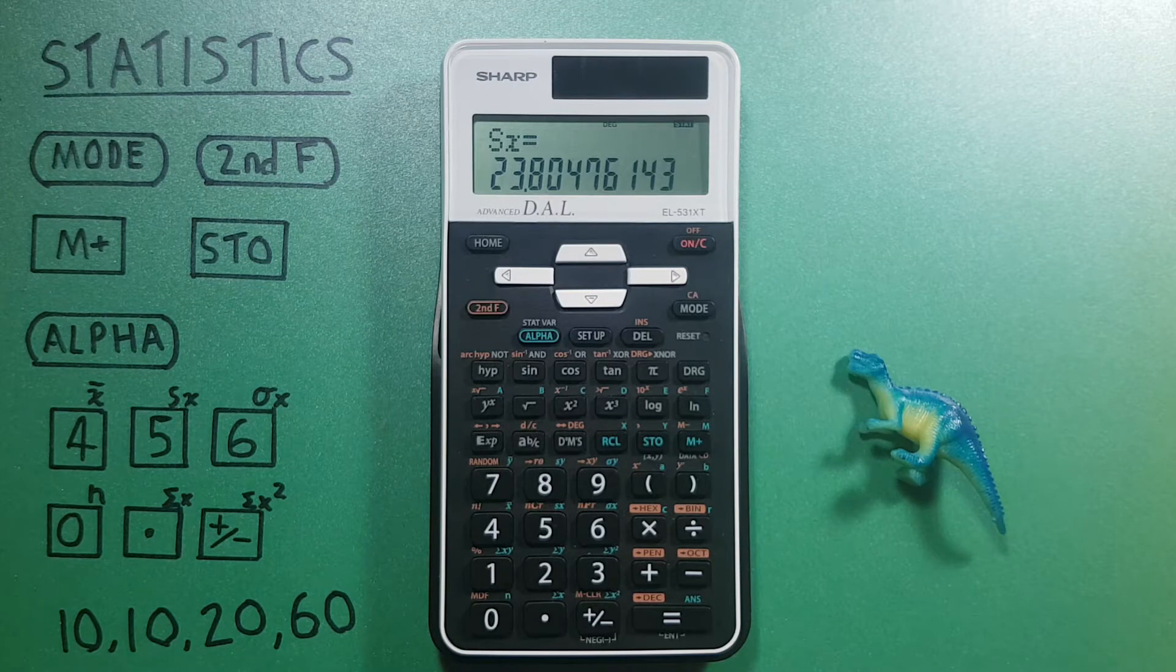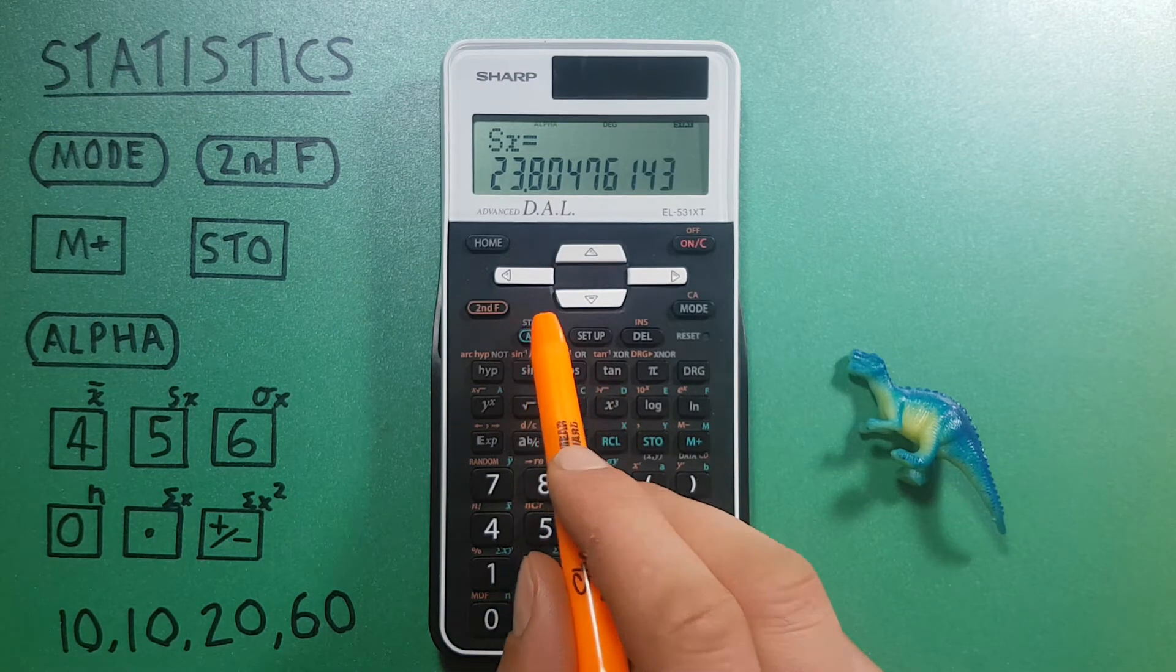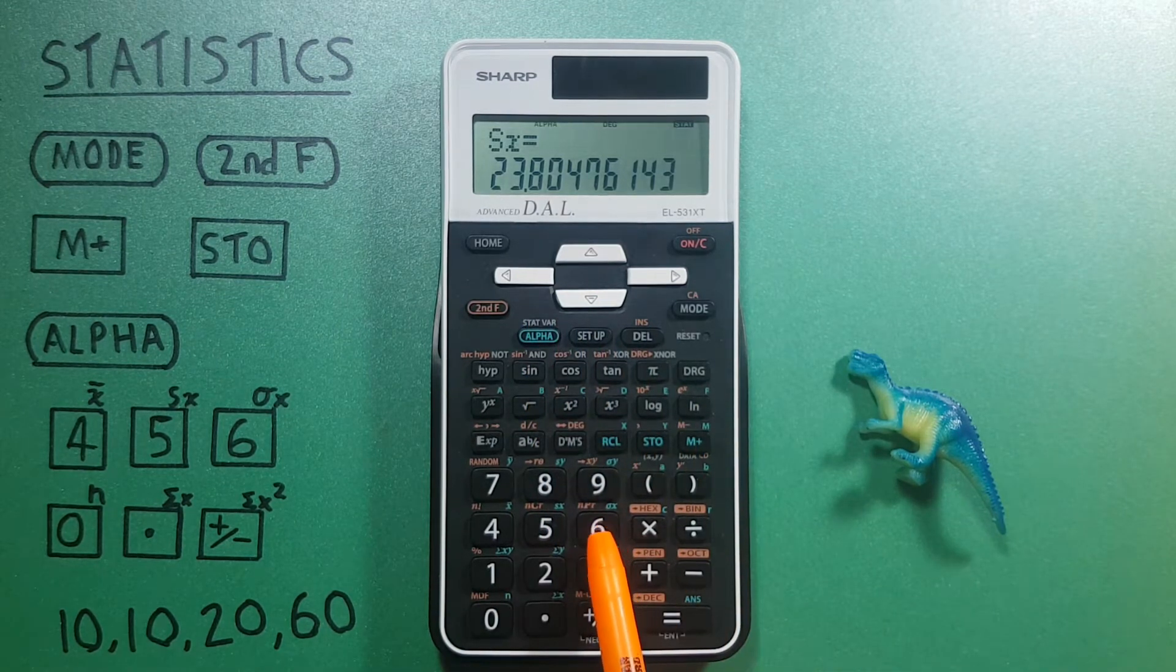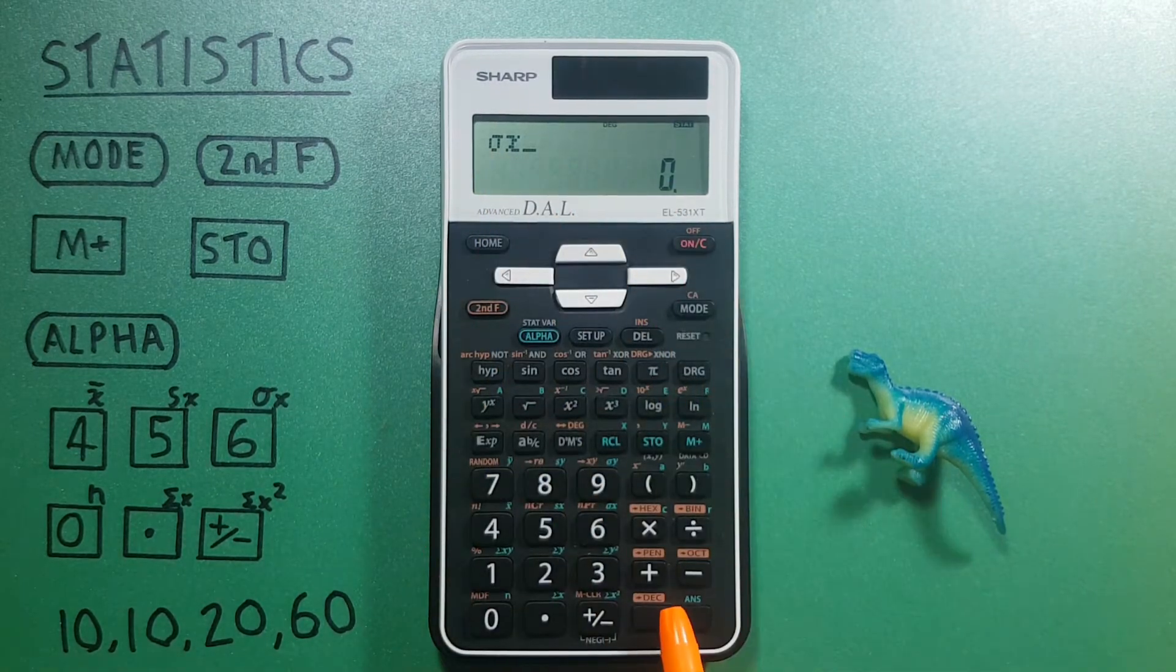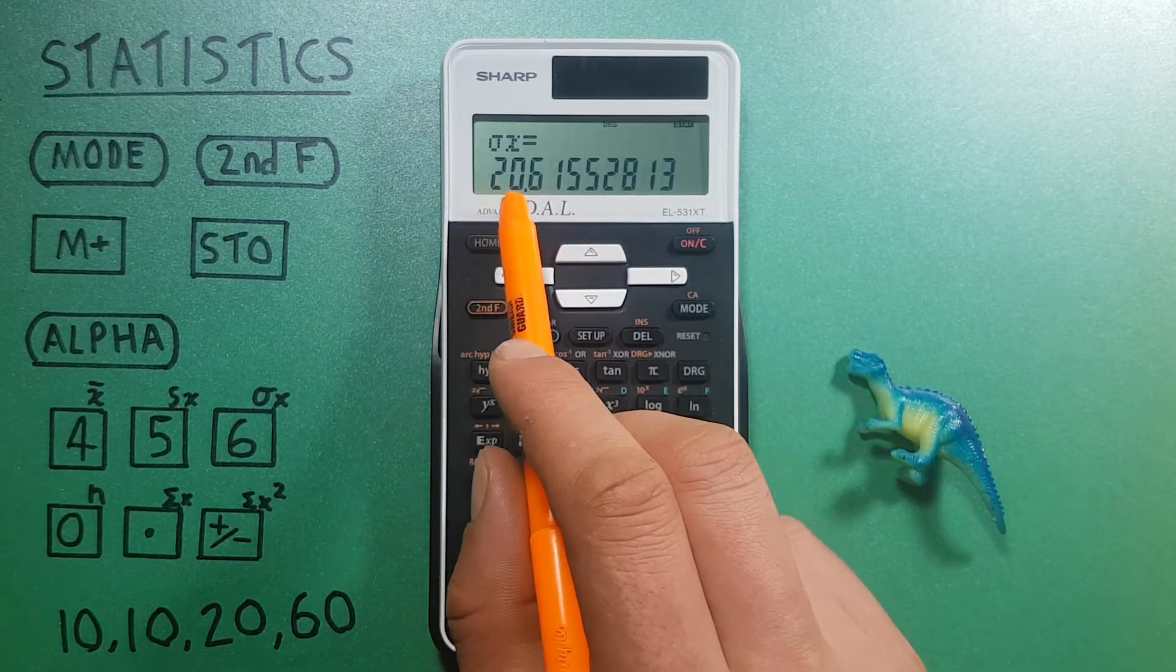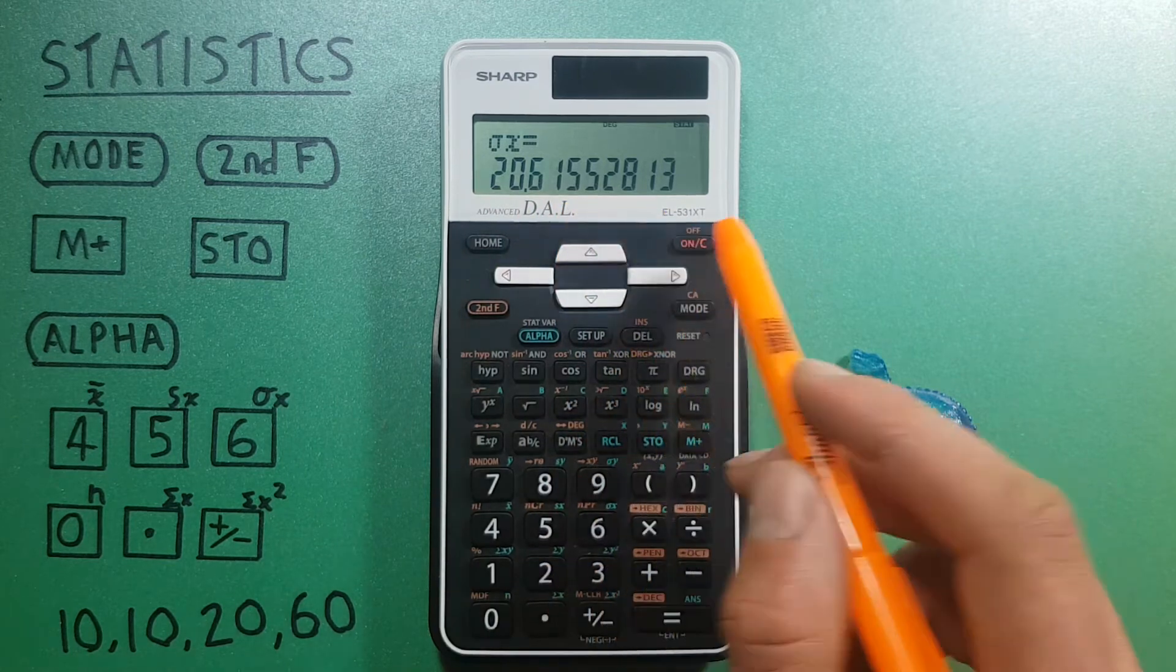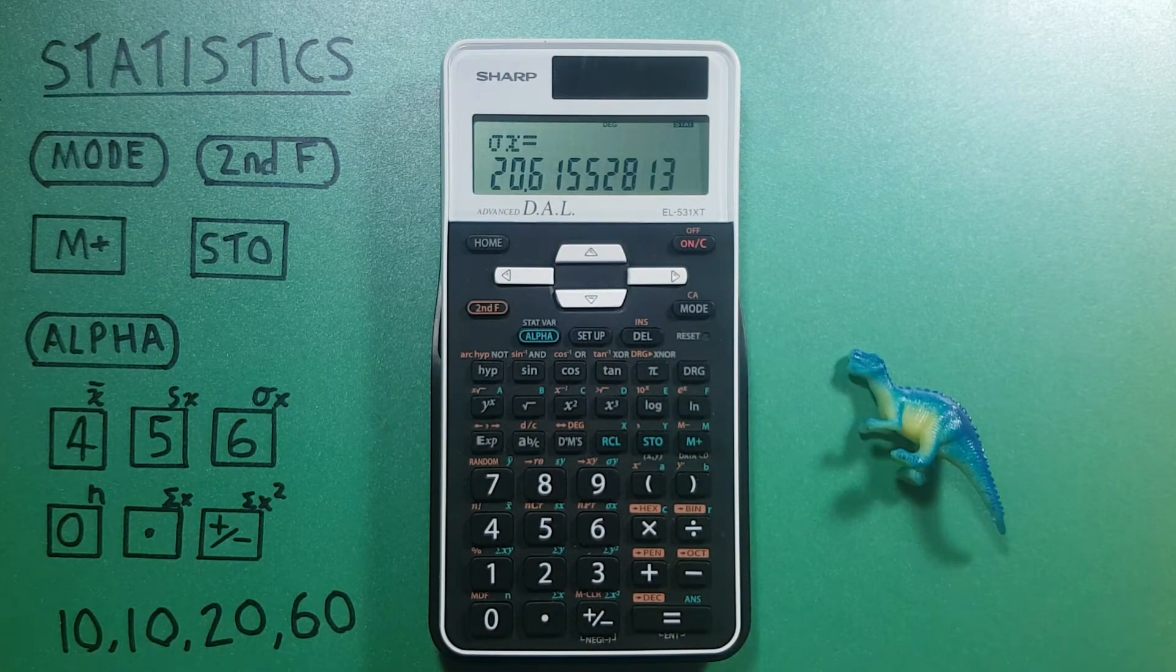We can then get our population standard deviation by using alpha this sigma X. There we go, press enter, and we get 20.615528 for our population standard deviation.